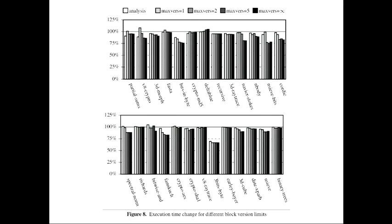This is the execution time change for different basic block version limits relative to a baseline — lower is better. In most cases we do get speedups, up to about 33% in the best case. On average, I believe it's 9% speedup on the benchmarks. It's not mind-blowing at this point, but I think we'll be able to improve on these results even more.